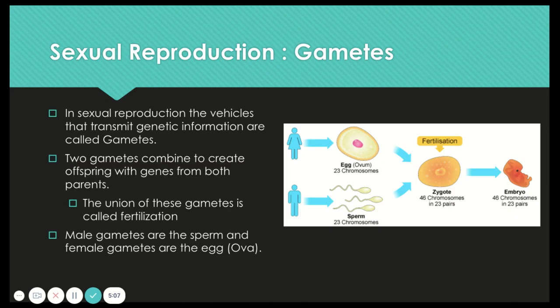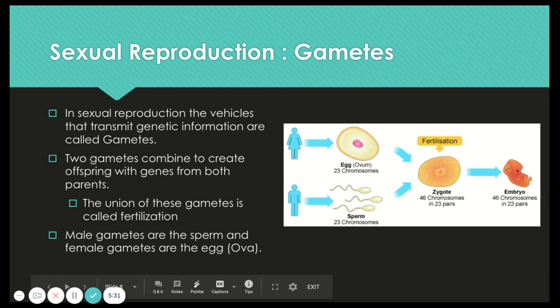Moving on from asexual reproduction to sexual reproduction. Sexual reproduction uses gametes — things like eggs and sperm. In sexual reproduction, the vehicles that transmit genetic information are called gametes. Two gametes come together to create an offspring in the form of a zygote. Male gametes are the sperm and female gametes are the egg, or the ova. They come together and create a zygote, which eventually becomes an embryo.